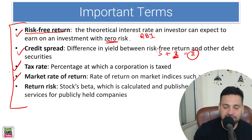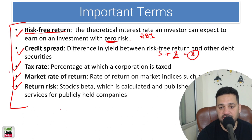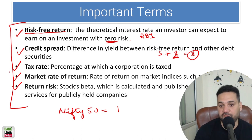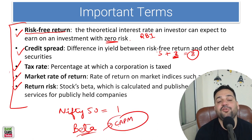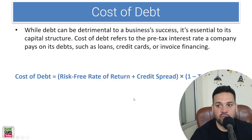Market rate of return is the rate of return on market indices such as Nifty 50 or Sensex. Beta measures risk — the market risk of Nifty 50 is 1. If you are expecting more return than Nifty 50, you need to take extra risk for that. We measure that risk with the help of beta, and I've already covered the CAPM topic in a previous session.